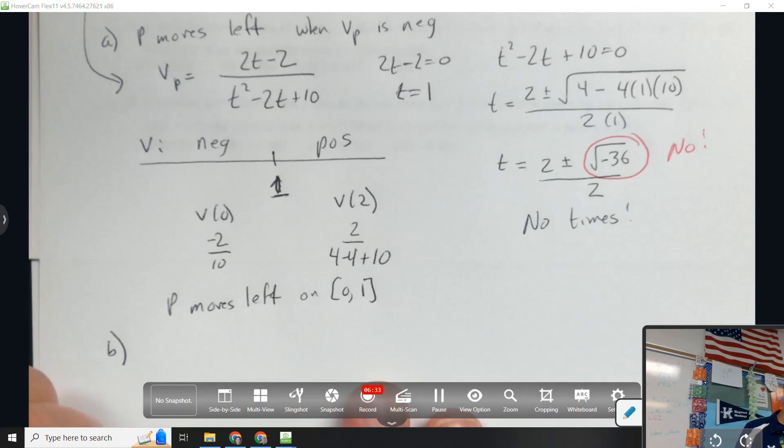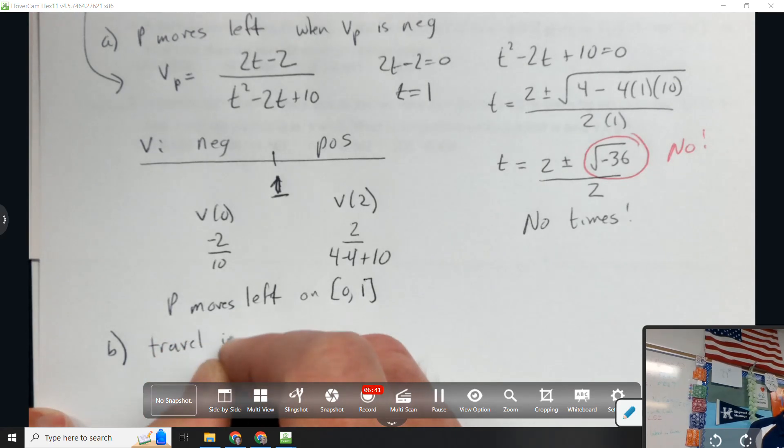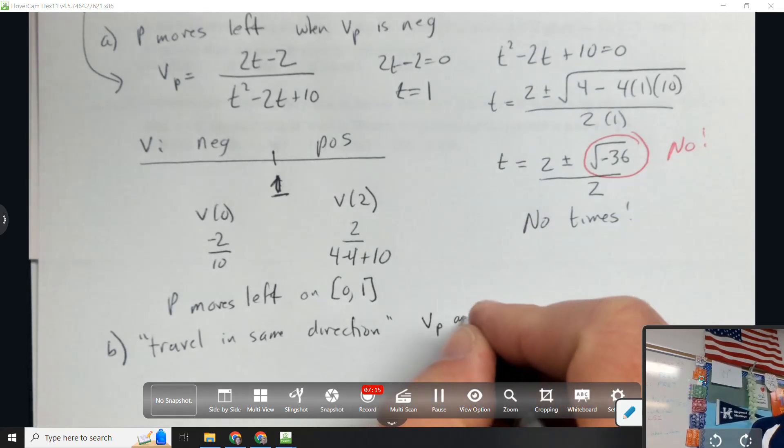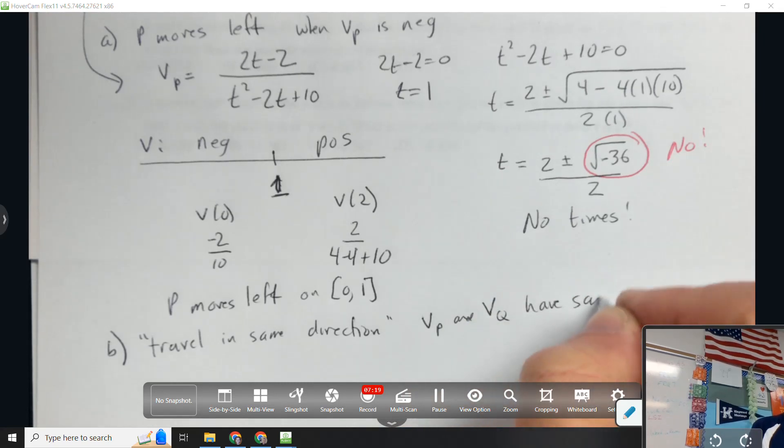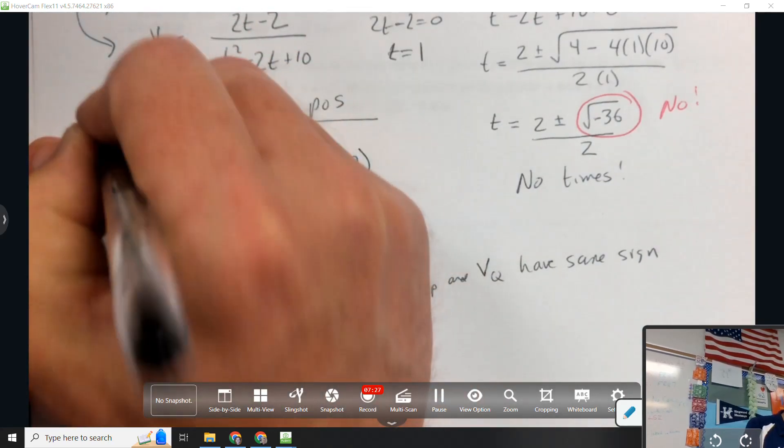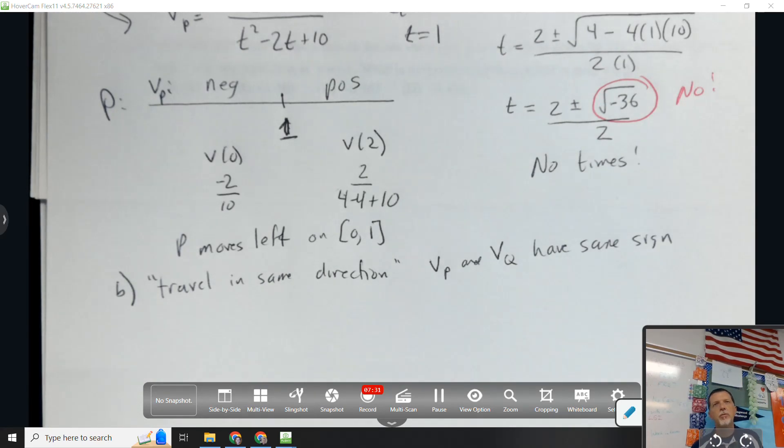Question D: for 0 to 8, find all times t during which the two particles travel in the same direction. What does that mean? What am I looking for? Same velocity? Same sign. Same sign of what? Of velocity. Their velocity has the same sign. So they may not be at the same spot, but they're moving toward the right or toward the left.